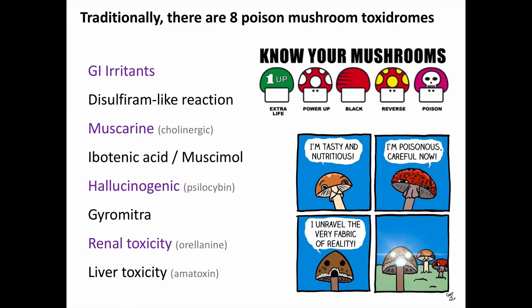There are several types of poisonous mushrooms causing different constellations of signs and symptoms. Although some references suggest higher numbers, traditionally there are 8 poisonous mushroom toxidromes. This slide lists them out and indicates the order in which they are going to be discussed.